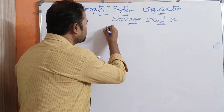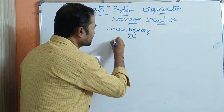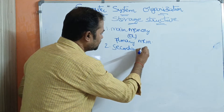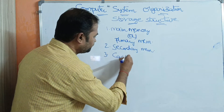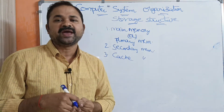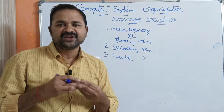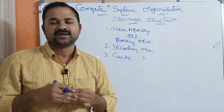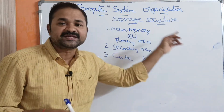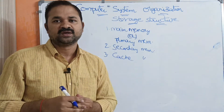In order to store data, we have three types of memories. The first memory is main memory, also called primary memory. The second one is secondary memory, and the third one is cache memory. Main memory is useful in order to store the data which can be used by CPU, because any task or program can be executed by CPU only when the program resides in main memory.